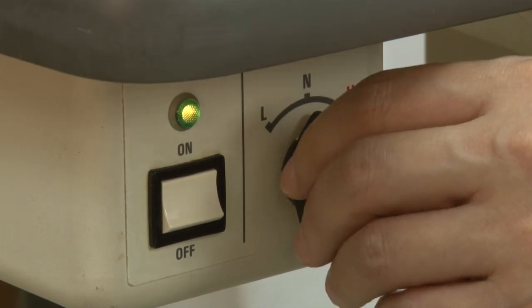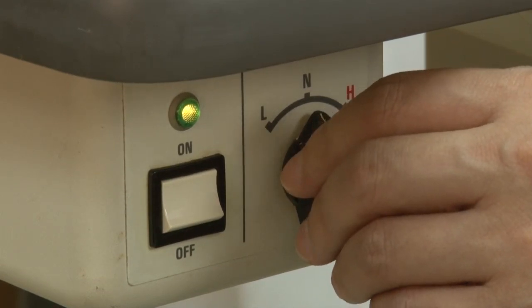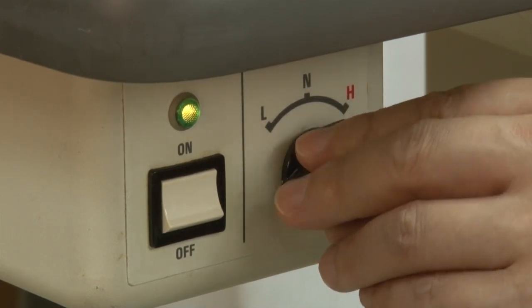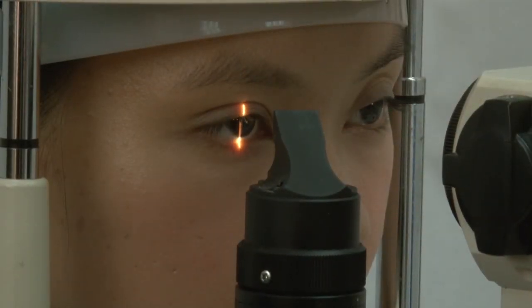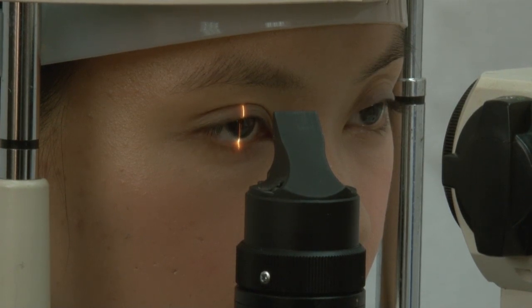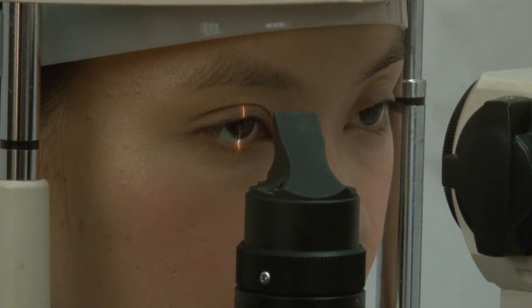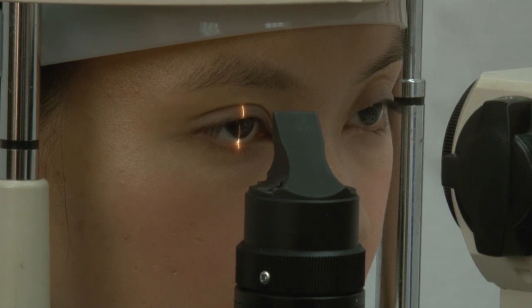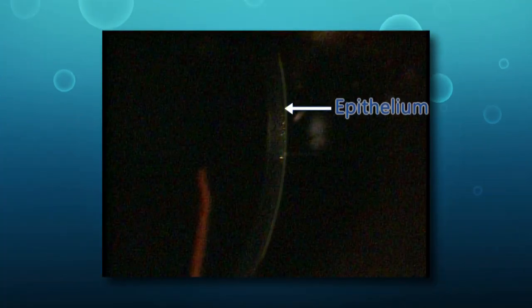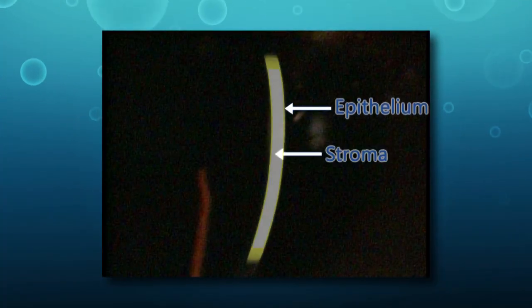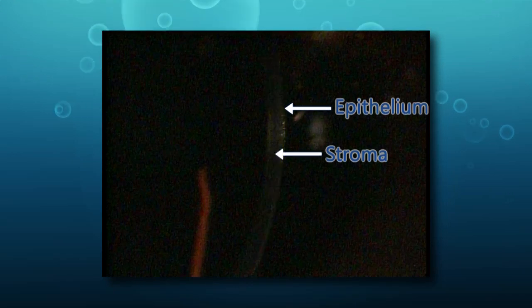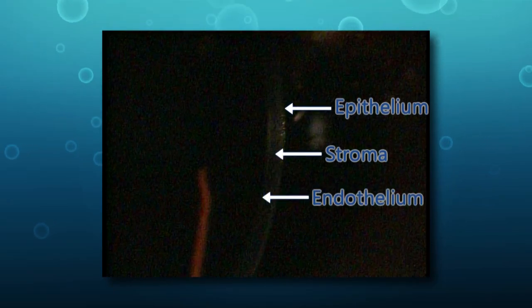Gradually increase the light source from low to medium to high. This illumination is generally used to view a cross-section of the cornea. An optic section helps to differentiate the various layers of the cornea, including the epithelium, the stroma, and the endothelium.